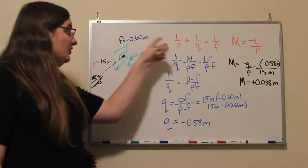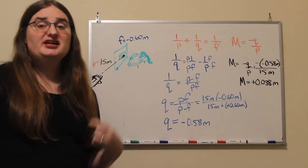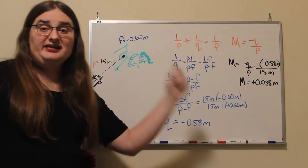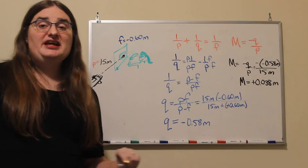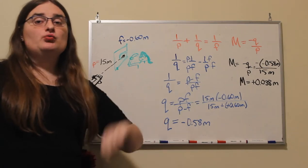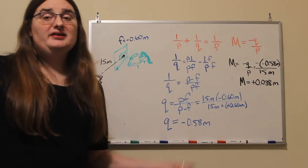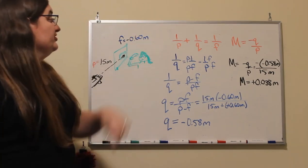So we can use our image location equation to locate the image distance, and from that we can calculate the magnification. And based on the magnification we can figure out do we get something that's enlarged, reduced, do we have something that is upright, inverted. So let's look at the details.